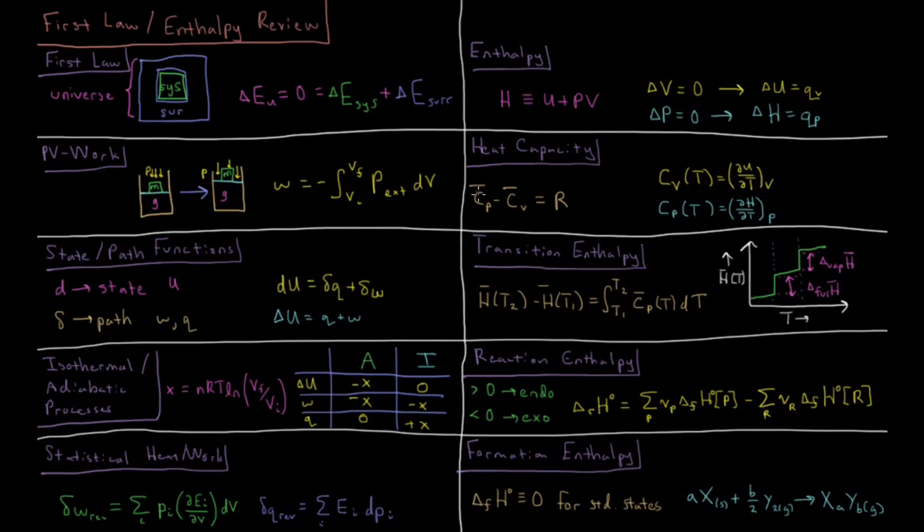And those two vary by the gas constant. The molar constant pressure heat capacity minus the molar constant volume heat capacity is equal to the gas constant. So our constant pressure heat capacity is slightly higher than our constant volume heat capacity.